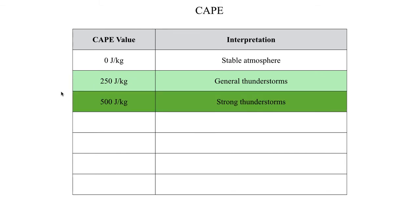Right around 500 joules per kilogram is where we might see a signal for strong thunderstorms — producing more sizable hail, maybe half-inch penny-sized hail, and stronger winds of 40 to 50 miles per hour. Usually you don't get severe thunderstorms with CAPE values around 500 joules per kilogram. If you do, it's probably not going to be severe for long — perhaps producing hail over one inch or winds of 60 miles per hour only through a narrow window of time.